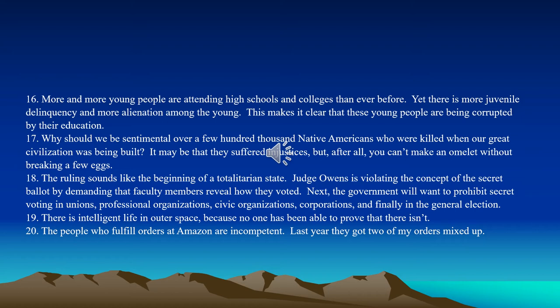Number nineteen: There is intelligent life in outer space because no one has been able to prove that there isn't. Well, that's true — no one has been able to prove there isn't intelligent life in outer space, but that doesn't count as evidence that there is. What would count as evidence? Maybe finding some, or some kind of contact that indicates intelligence. The fact that no one can prove there isn't doesn't count. So this is an appeal to ignorance.